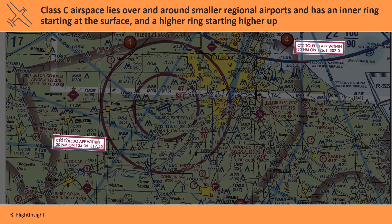This is sometimes called the procedural area, and it's not depicted on the chart, but there's a 20-mile ring that's invisible on the chart that is the procedural area.